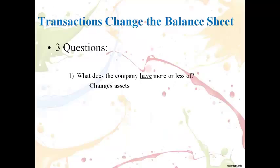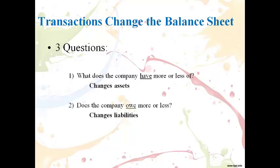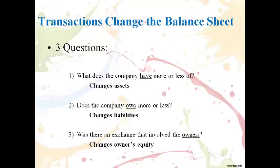The accountant tracks the items and amounts reported on the balance sheet as transactions occur. The answers to three questions will tell the accountant what is changing on the balance sheet: having more or less of an item with a future benefit will change an asset; owing more or less will change a liability; an exchange directly with owners will change owner's equity.